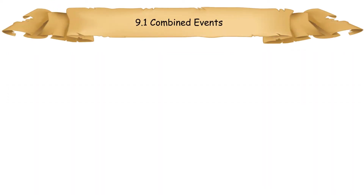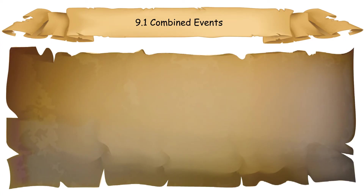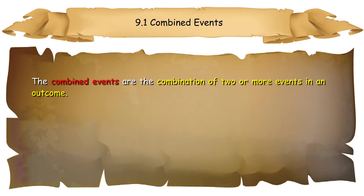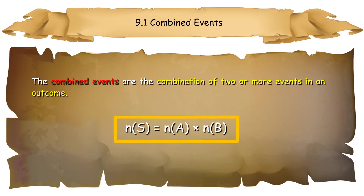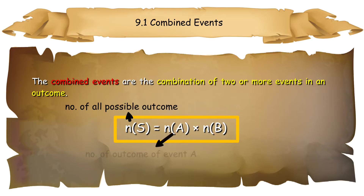9.1 Combined Events. Probability is used to evaluate the uncertainties that are associated in the process of decision-making. The combined events are the combination of two or more events in an outcome. n(S) equals n(A) times n(B), where n(S) is all the possible number of outcomes, and n(A) and n(B) represent the number of outcomes of event A and event B.